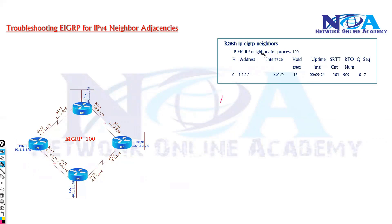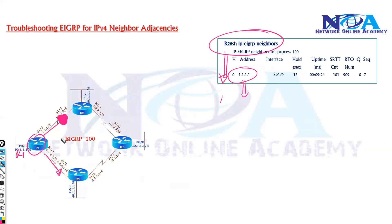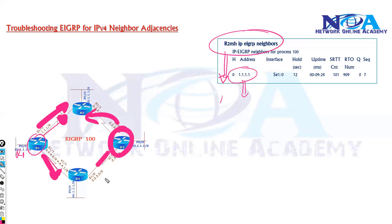To troubleshoot we start with the EIGRP neighbor table. The first command we use is 'show ip EIGRP neighbors'. When we run this command, we expect the neighbor entry to appear in the neighbor table. For example, on router 1, if everything is okay I should see two neighbors as per my topology, and similarly if I verify on router 3 I should also see two neighbors.